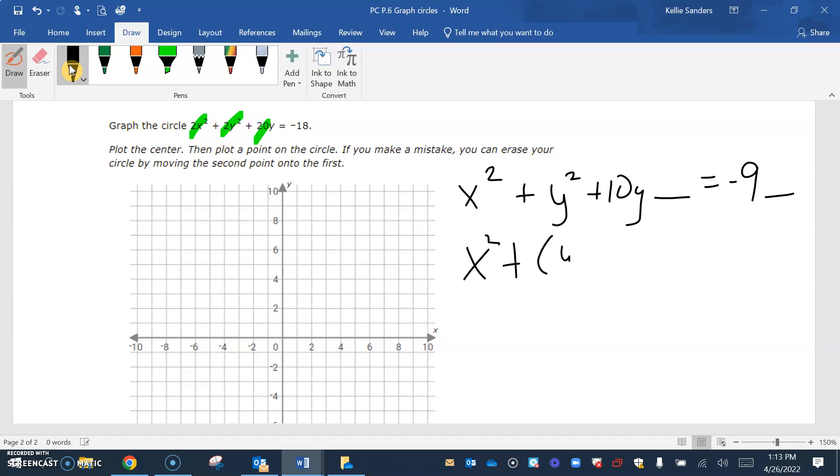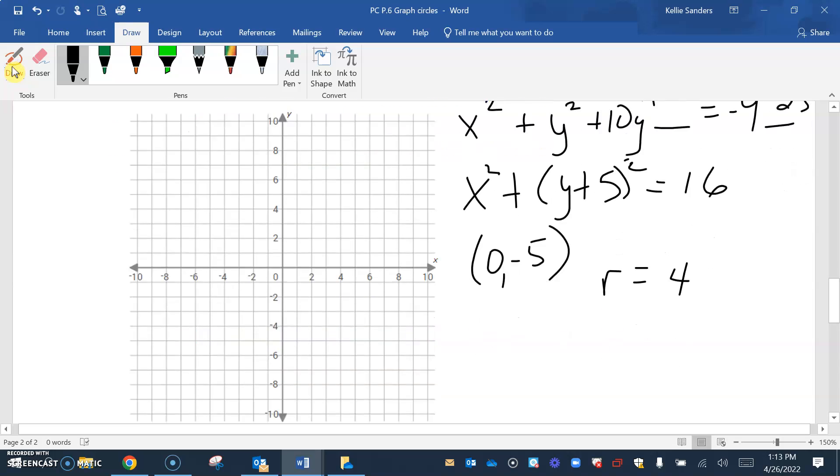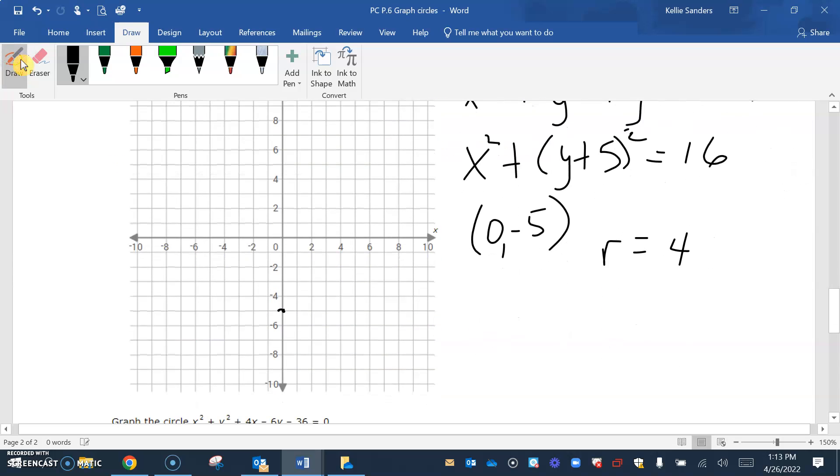So that's going to be x squared plus (y + 5) squared. 5 squared is 25, so I'm going to add the 25 and I'm going to get 16. So our radius is 4 and our center is (0, -5).